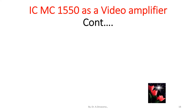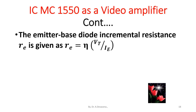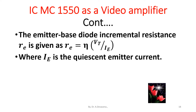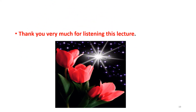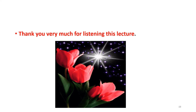The emitter base diode incremental resistance R_E is given as R_E = η·V_T / I_E, where I_E is the quiescent emitter current. Thank you very much for listening to this lecture. For further updates, kindly subscribe to this channel. If you like this video, please share it with your friends. Thank you.